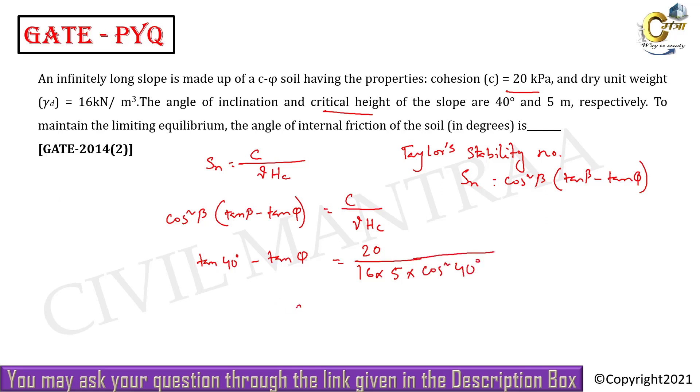From here, φ value will come as 22.44 degrees. So β value is 40 degrees and φ value is 22.44 degrees. This means φ is less than β, but still the soil will remain safe. Why? Because the soil has cohesion - there is c in the soil, so due to cohesive force the slope can be stable.